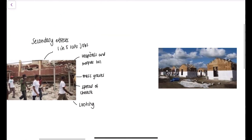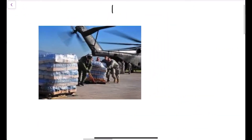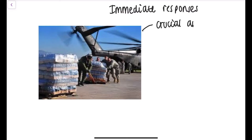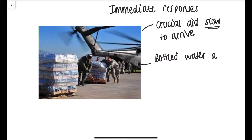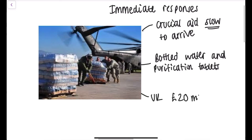In terms of immediate responses, crucial aid was slow to arrive due to the damaged ports and airports — an important evaluation point, as quicker aid could potentially have reduced the death toll. Bottled water and purification tablets were provided to tackle cholera. The UK government donated £20 million, the USA sent rescue teams and 1,000 troops to support evacuation, and 235,000 people were evacuated to less damaged cities.